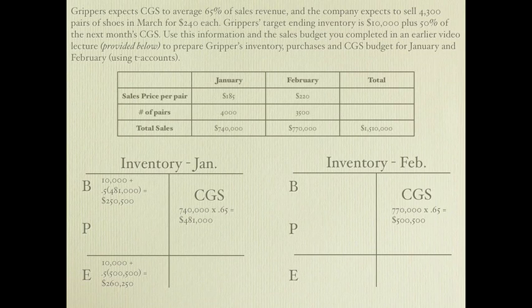Now we can calculate budgeted purchases for January by solving for the unknown. Cost of goods sold plus ending inventory minus beginning inventory gives purchases of $490,750.